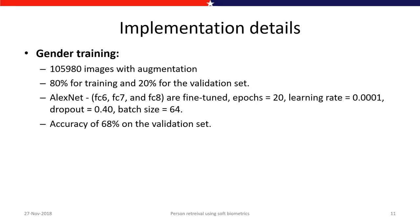The gender model is trained on 150,980 images with an 80/20 training-to-validation ratio. LXNet was fine-tuned with the last three layers over 20 epochs, with a batch size of 64, learning rate of 0.0001, and dropout rate of 0.4. Validation accuracy for the gender model is 68 percent.